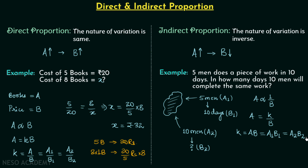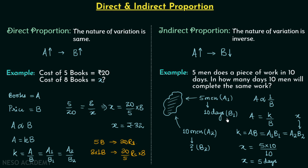Using a1 × b1 = a2 × b2: a1 is 5, b1 is 10, a2 is 10, and b2 is x. So x equals a1 × b1 divided by a2, which is 5 × 10 divided by 10, giving us 5 days. So 10 men will take 5 days to complete the same work that 5 men completed in 10 days. I hope you now have a clear understanding of direct and indirect proportion. See you in the next lecture.